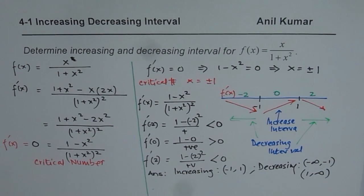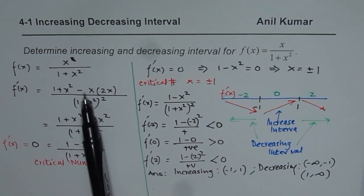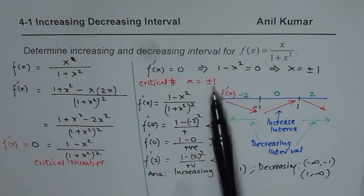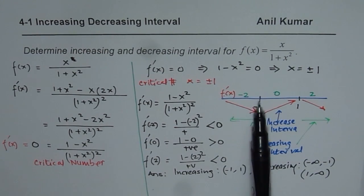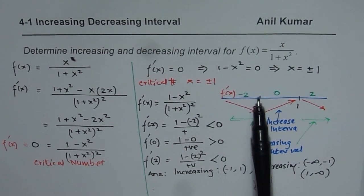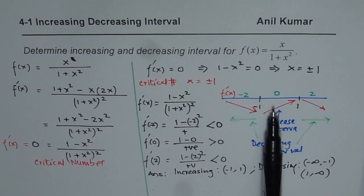Follow these steps whenever you need to find increasing or decreasing intervals: find the derivative of the function, find the critical points — we got two here — and these critical points give you zeros for the slope of the tangent. Check the slope on either side of these zeros: if negative, it is a decreasing interval; if positive, it is an increasing interval.